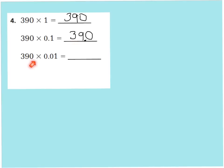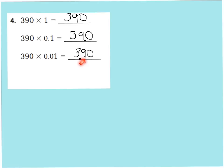Let's look at the next one: 390 times 1 hundredth. Write 390, and normally we would put our decimal point here for the identity property. But we're going to move our decimal point two places to the left — one, two places. So 1 hundredth of 390 is 3 and 9 tenths, also known as 3 and 90 hundredths.